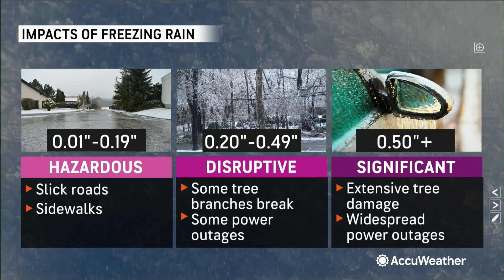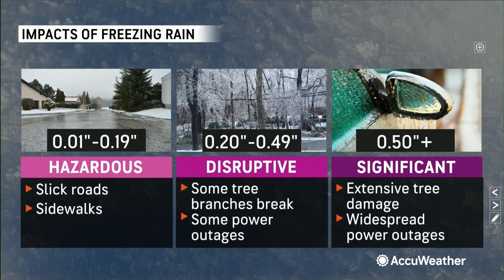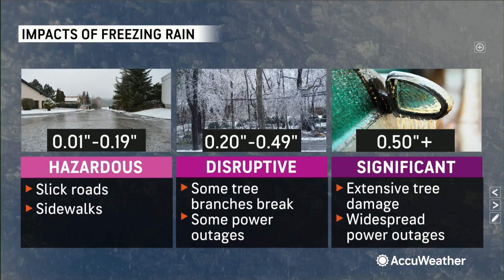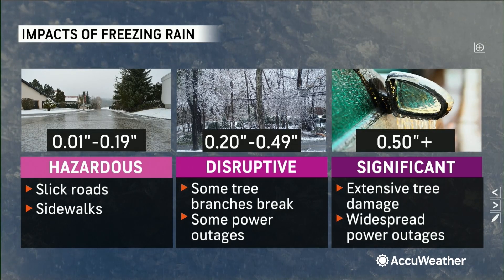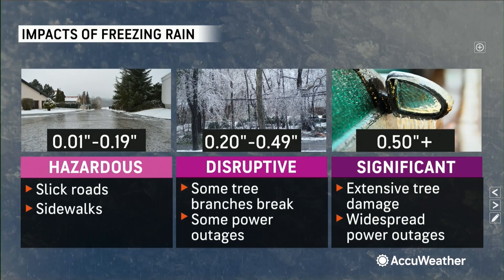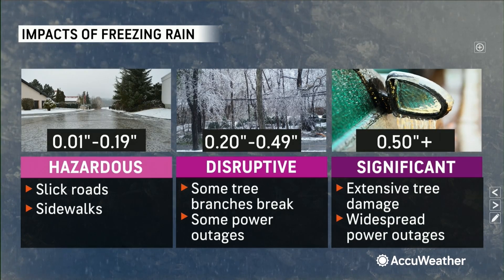And as that ice thickness goes up, it's really heavy. So for power lines, for example, as we build that ice thickness on the power lines, it can weigh too much and actually cause them to break. Between a quarter to a half inch of ice can lead to a lot of power outages, and even more when you get more than a half inch to an inch of ice.